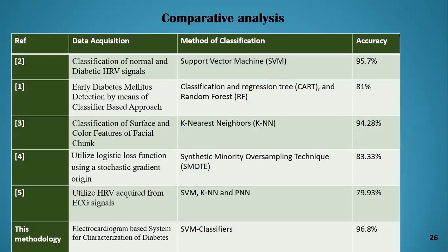This is a comparative analysis of our technique with other techniques used in prior studies. Different researchers used different classifiers and achieved varying accuracies. Comparing all approaches, our method using electrocardiograms (ECG signals) for the characterization of diabetes achieved the highest accuracy of 96.8%, outperforming all other techniques in the comparison.